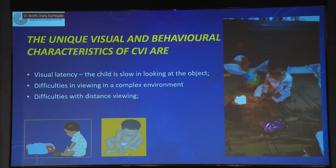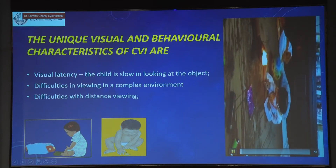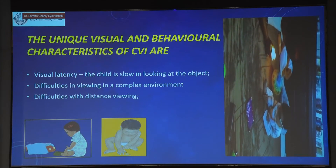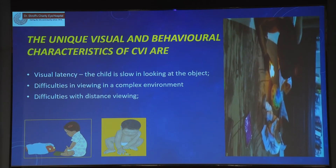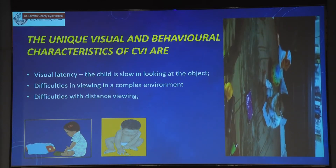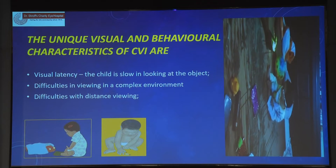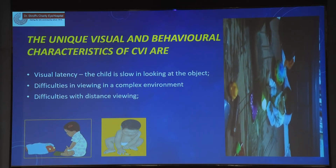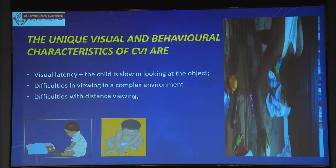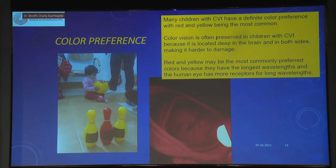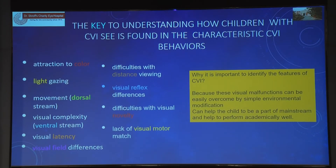Visual latency is another feature — a child who had cataract surgery with CNS problems, even after surgery with appropriate glasses, still had difficulties viewing in a complex environment. Parents said surgery was done six months ago but the child still can't see well. These are children we need to send to vision rehab or early intervention to improve coordination. Color preference — attraction to red and yellow — is something we also see. These visual function issues can be overcome by simple environmental modification, as early intervention specialists have taught us.